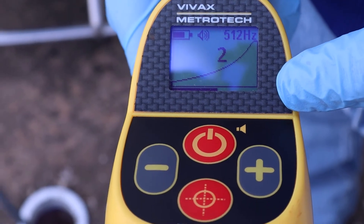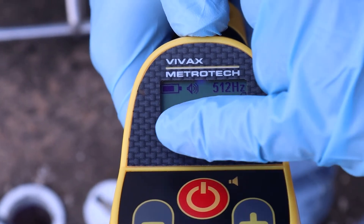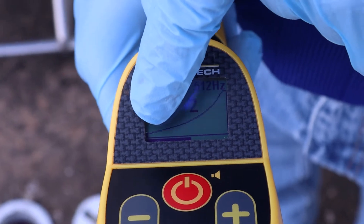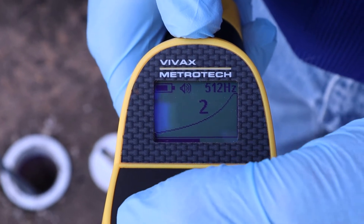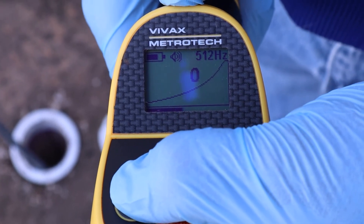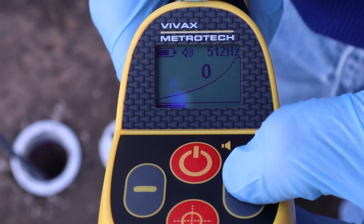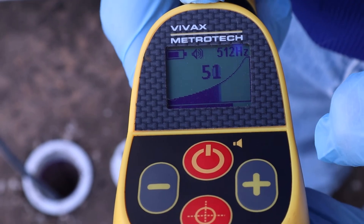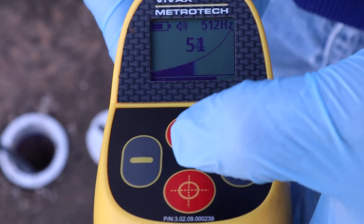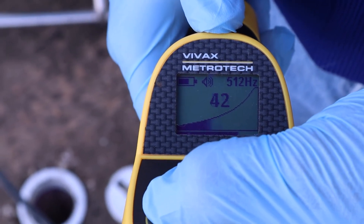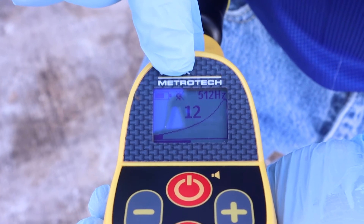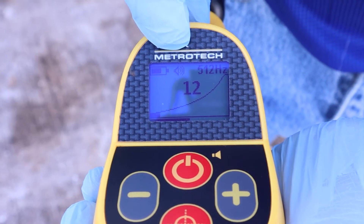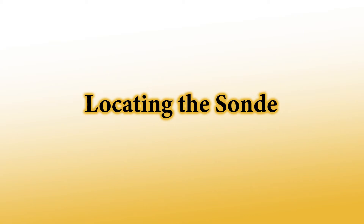The next thing we need to know is how to adjust the gain. The gain is indicated by the bar graph and the number on screen, and where you are in the gain scale is shown by a small line at the bottom of the screen. To adjust the gain, use the plus and minus keys to increase or lower it. If you just tap it, it enters semi-automatic gain and will adjust until it finds a frequency at 512 Hz. Right now we're not locating anything, so it's just bouncing around. To turn the volume on and off, just tap the on/off key — you'll see an X by the speaker when it's muted. Turn it back on and you'll see the hash marks coming out of the speaker icon.